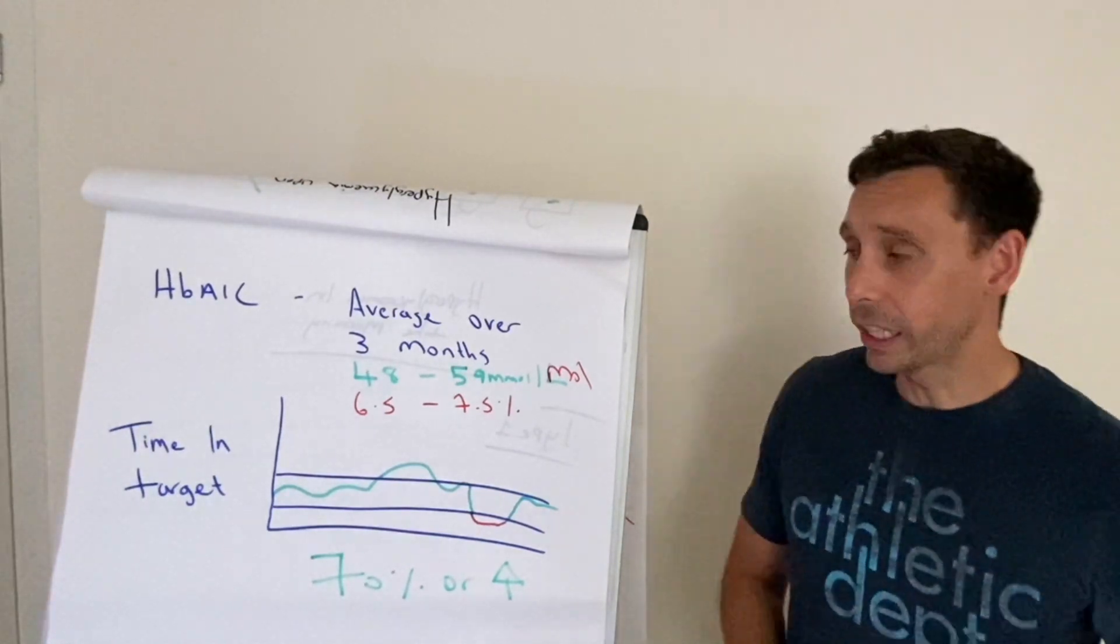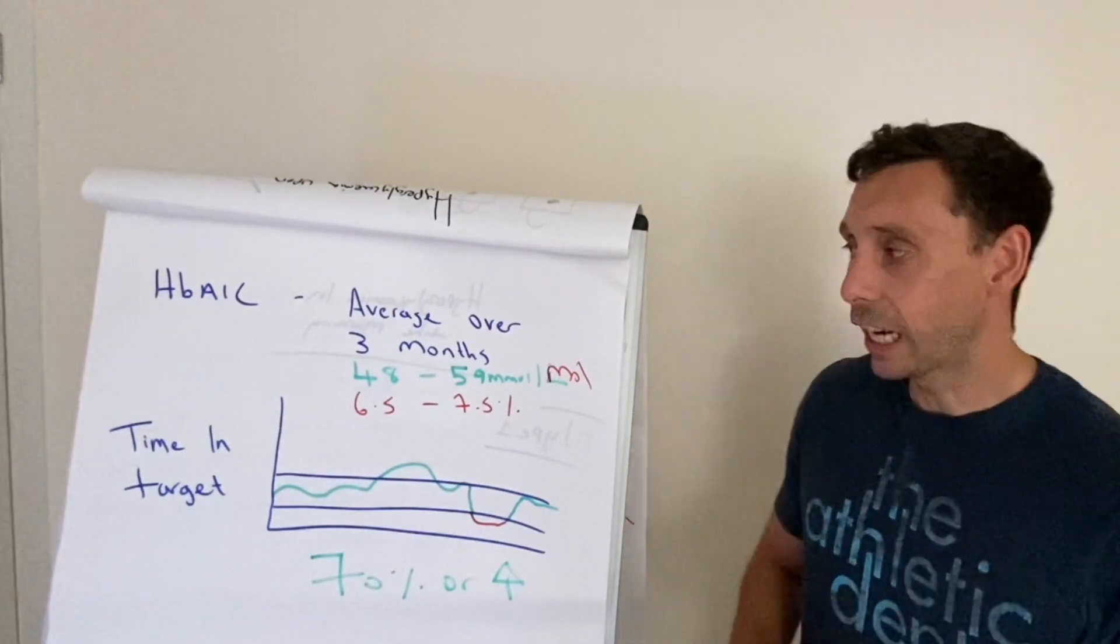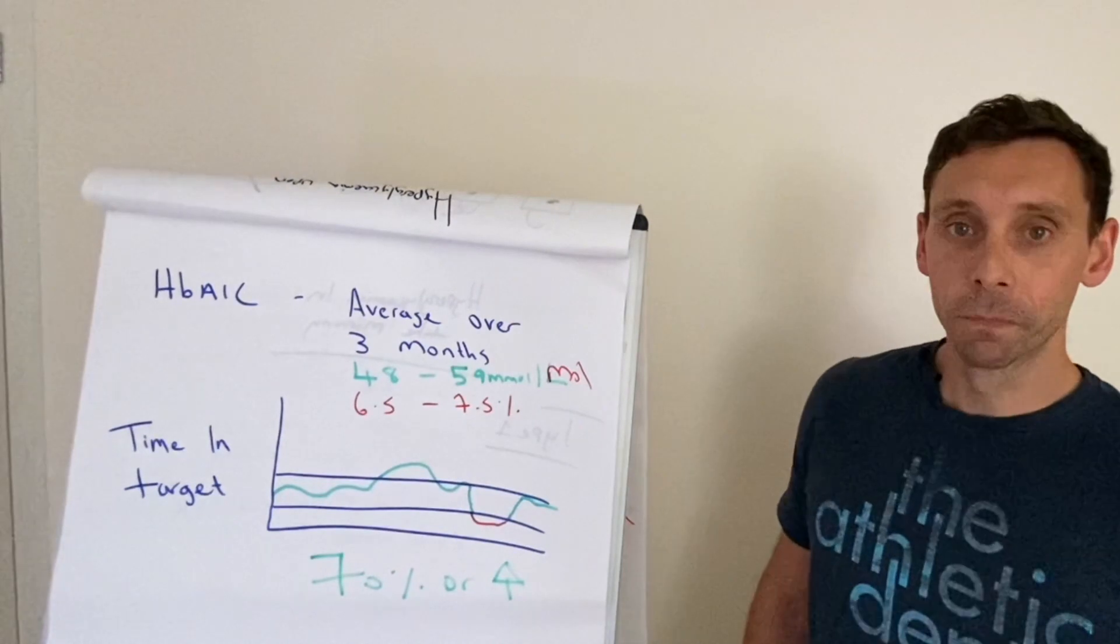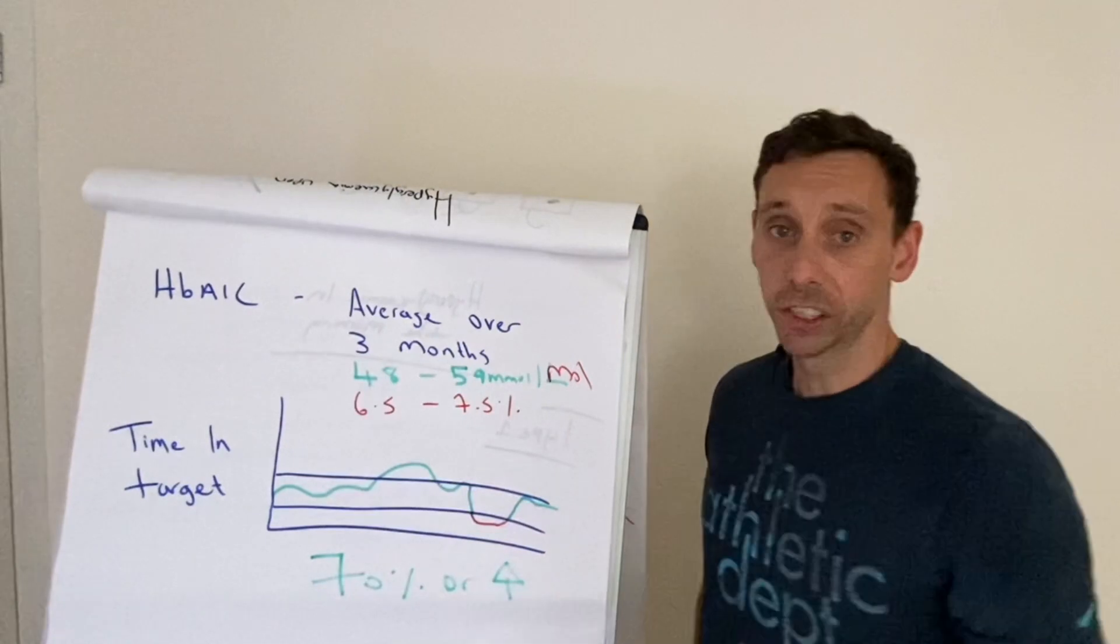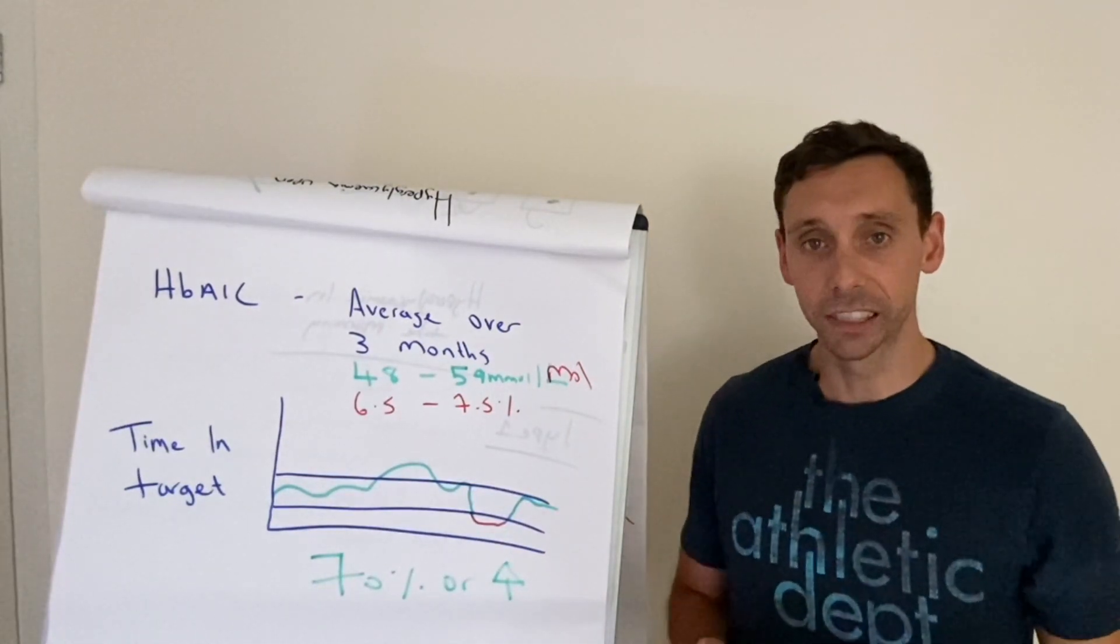Now, as the board's given away, we have two measurements. We have the HbA1c test, and we have something called time in target. We're going to touch on both of these, but we'll start with the HbA1c because this is the more conventional test that is used.